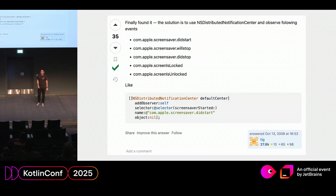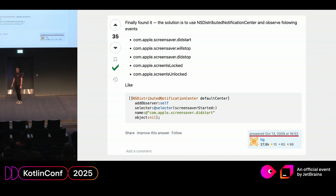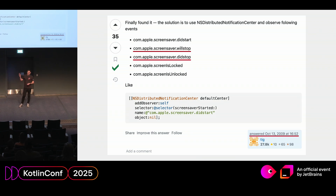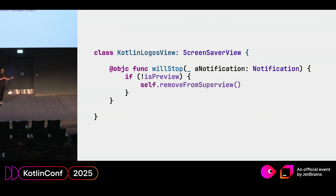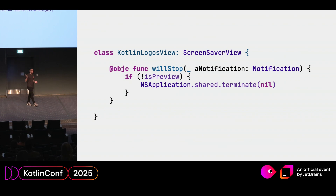Digging into the depths of Stack Overflow, I found a post from 2009 suggesting there are events you can sign up for in screensavers: will stop and did stop. One of them works and one doesn't — will stop is actually called when the screensaver is dismissed, and you can do some shutdown there. I ended up removing my own view from the super view so the process still runs but consumes basically no resources. And you can also just forcibly terminate the entire process — the system will recreate it when needed, which is actually what it used to do before Sonoma.